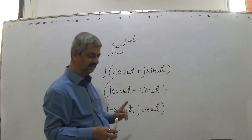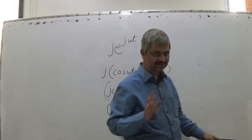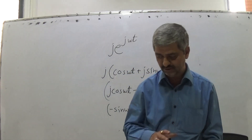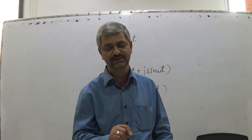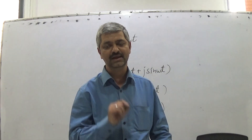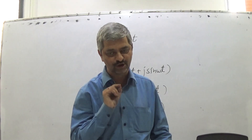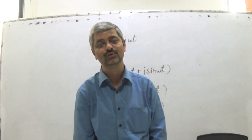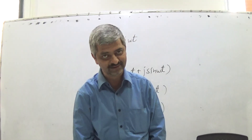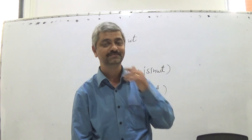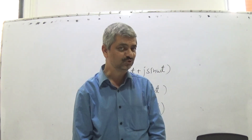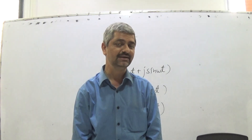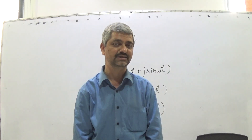Now, we are ending this session. We have established that e raised to j omega t is a rotating point on the unit circle at an angular speed of omega in the anticlockwise direction. At t equal to 0, e raised to j omega t is a point rotating on the unit circle at an angular speed of omega in the anticlockwise direction.